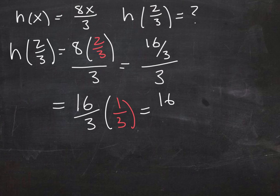So the trick here is this: the business of dividing by three is the same as multiplying by a third.